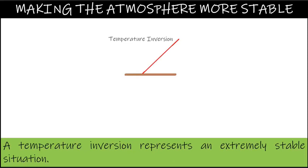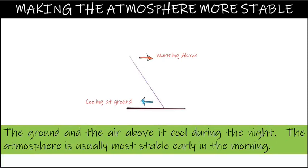A temperature inversion represents an extremely stable situation. Rising parcels always cool with increasing altitude, but in an inversion the surrounding air gets warmer and warmer with altitude. The difference between the cold parcel air and the warmer surroundings gets larger with increasing altitude. The ground and air above it cool during the night, so the atmosphere is usually most stable early in the morning. As the day progresses, sunlight warms the Earth's surface, increasing the environment lapse rate, thus the atmosphere becomes unstable during the afternoon.